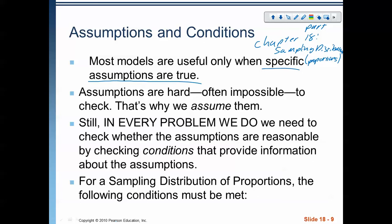Sometimes these things are hard, often impossible to actually check, so we assume them to be true. But we do need to be giving evidence. So in every problem we do, we need to check whether the assumptions are reasonable by checking certain conditions that provide information about the assumptions. So we have a list of those that we're going to be checking.